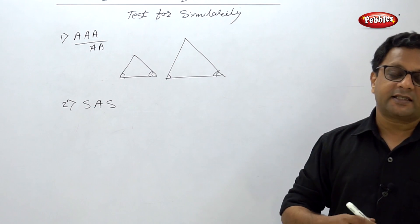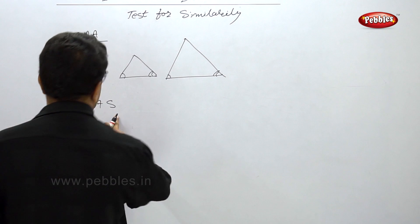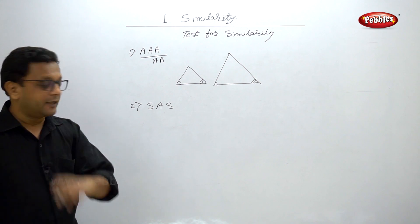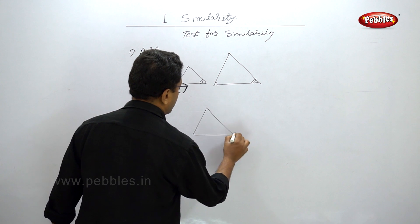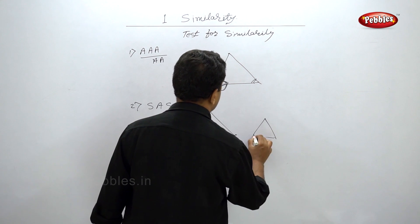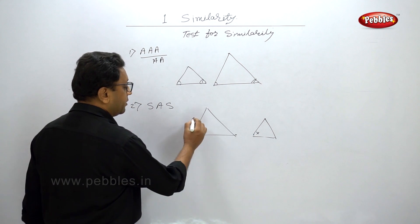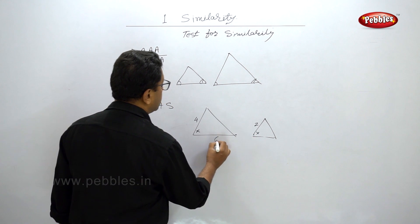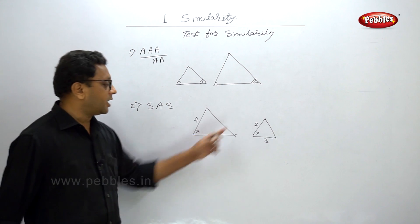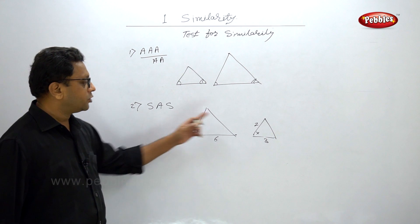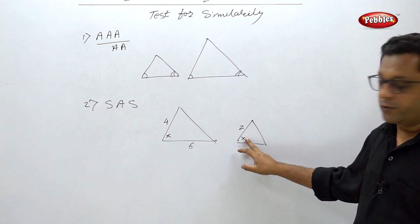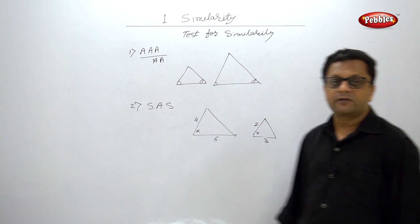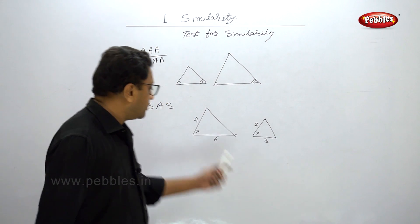The second test is the SAS test of similarity. Here, this is not a test of congruency — it is a test of similarity. In these two triangles, if this angle is equal to this angle, and the two sides containing that angle are in the same ratio — for example, one side is 4 and its corresponding side is 2, and another side is 6 and its corresponding side is 3, giving ratio 1:2 in both cases — then by the SAS test of similarity, these two triangles are similar.